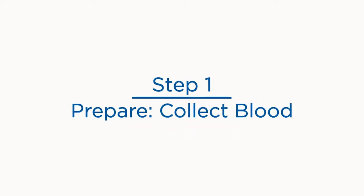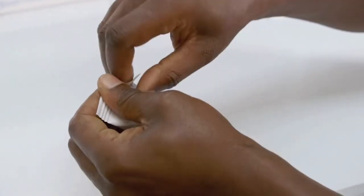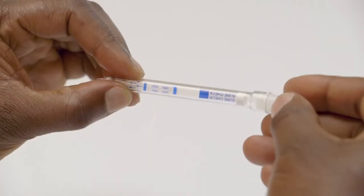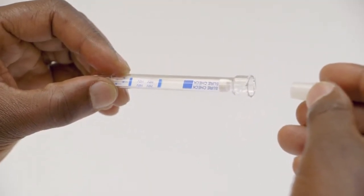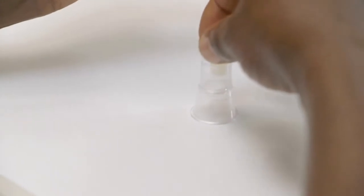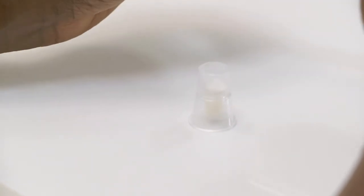In step one, we will collect blood. Tear open the foil pouch. Carefully remove buffer cap. Insert buffer cap into the test stand.